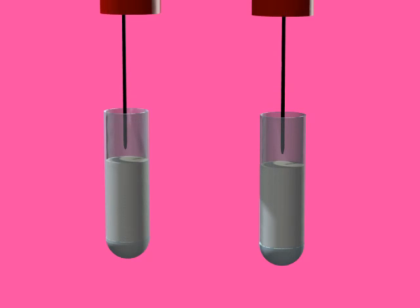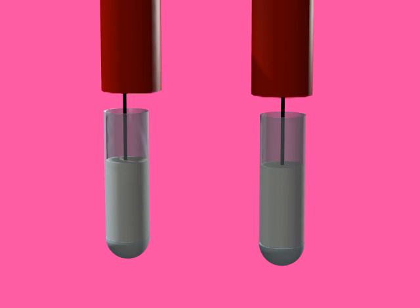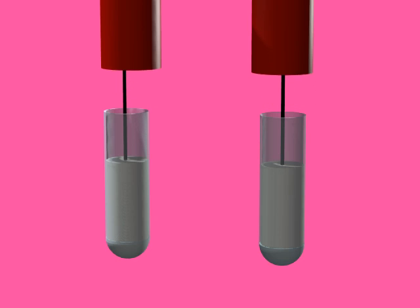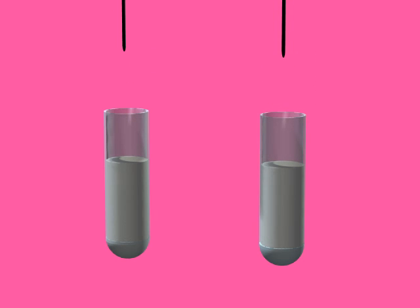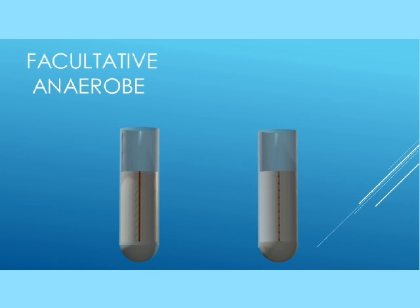The pattern of bacterial growth in an agar deep after bacteria from a culture are stabbed into it can indicate whether the bacteria are obligate aerobes, facultative anaerobes, or obligate anaerobes.